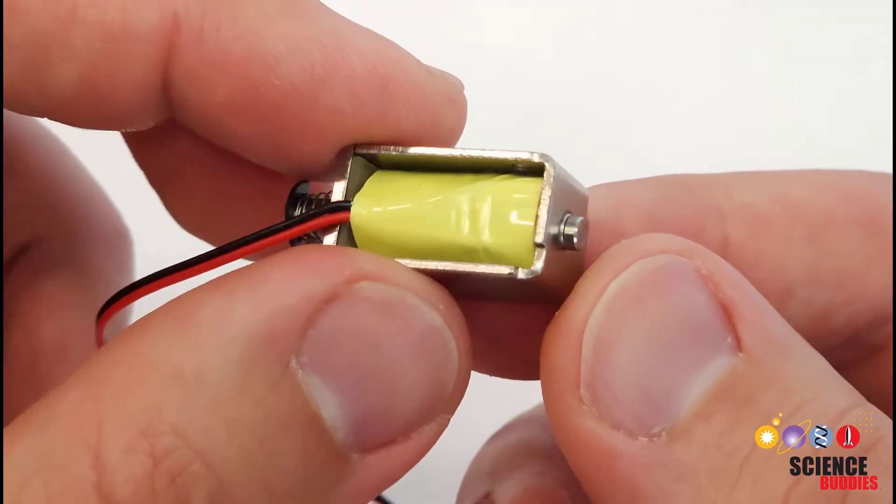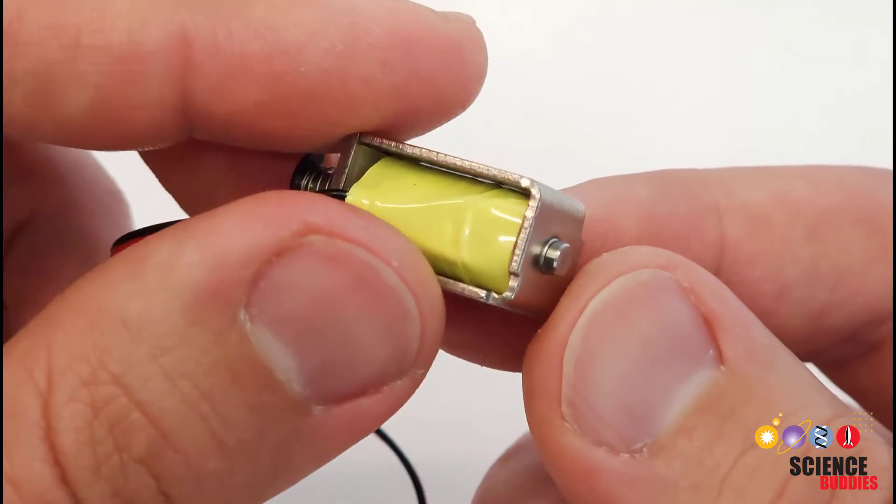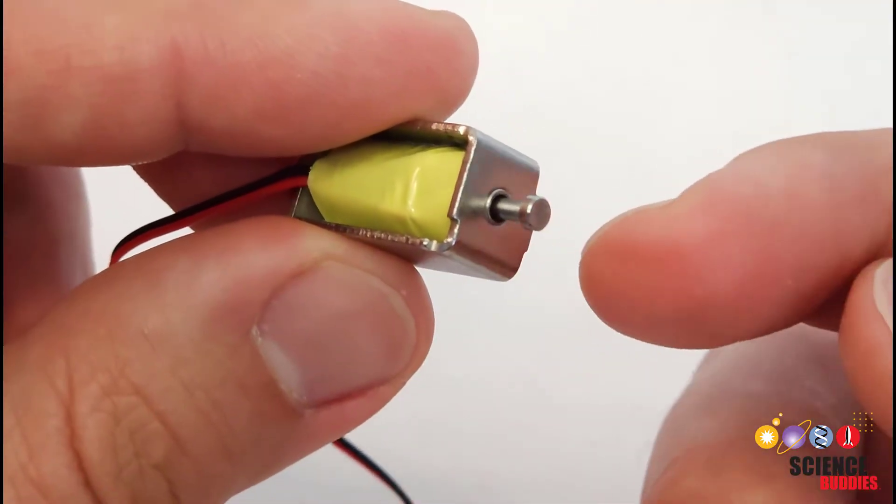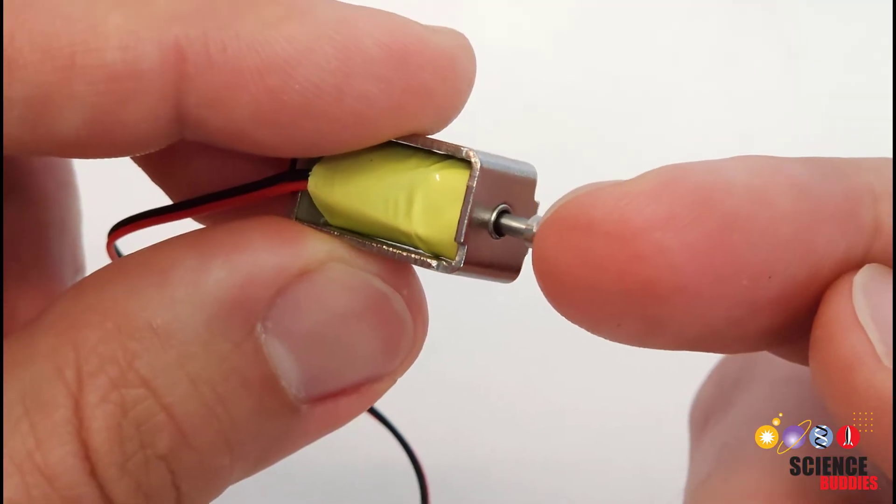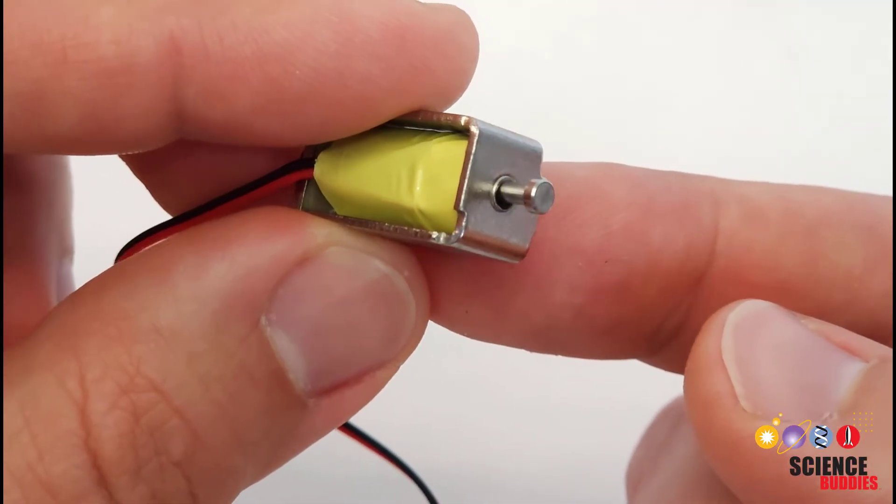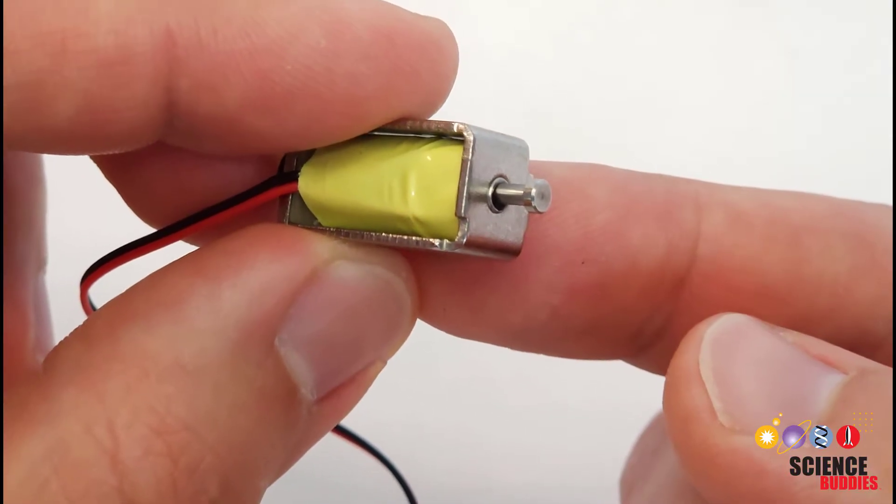Solenoids that are only a single type, so only push type or only pull type, are going to require some external load or force to push them back to their default position when you remove current. Otherwise, they will just stay where they are.